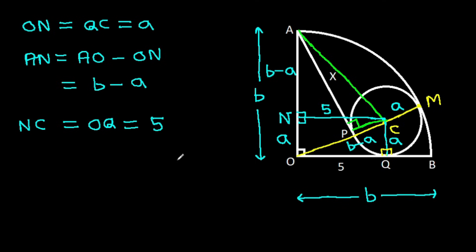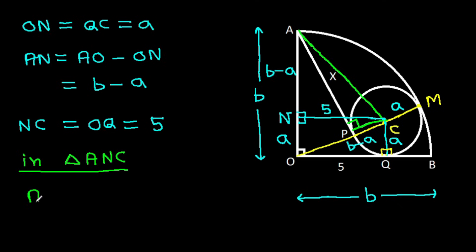And in triangle ANC, by the Pythagorean theorem, AC² equals AN² plus CN².